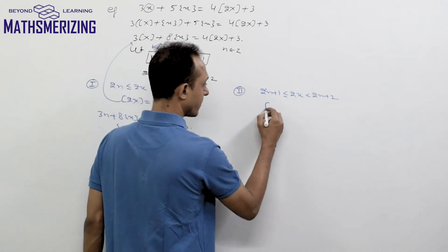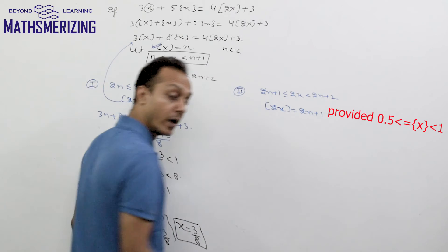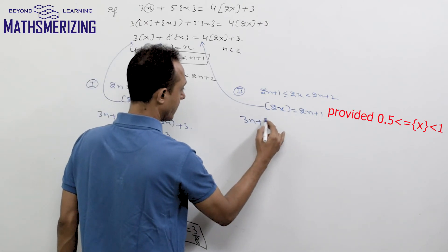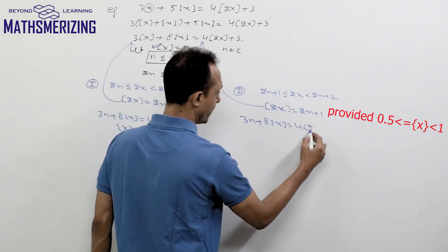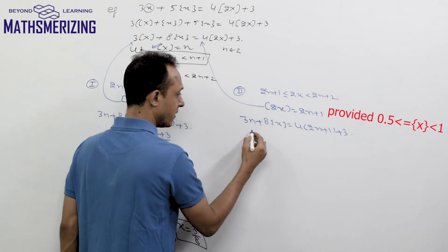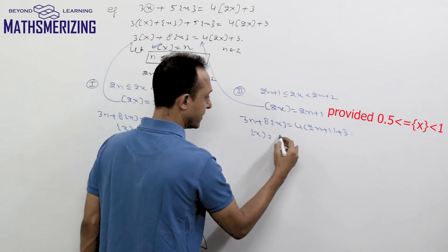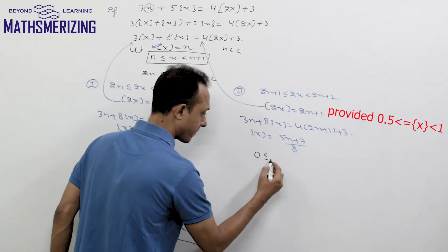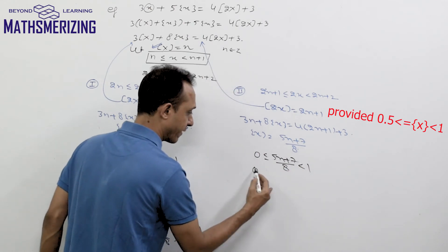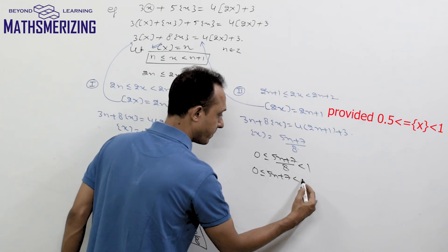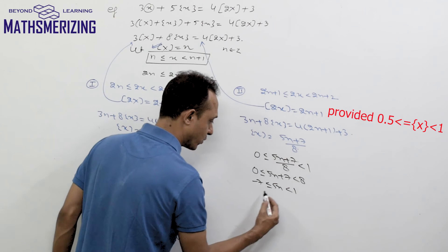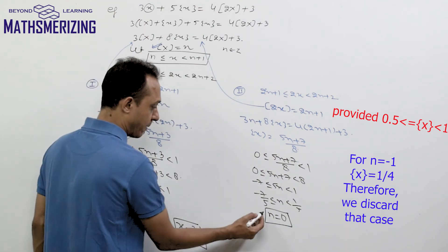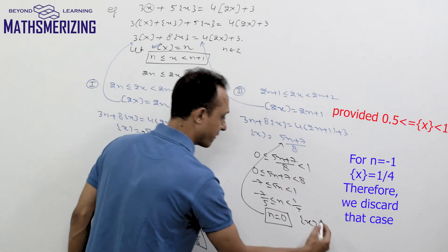Now I'll take up the second case. In Case 2, when 2x lies between 2n plus 1 and 2n plus 2, the greatest integer function of 2x is simply 2n plus 1. Substituting into the equation gives 3n plus 8 times the fractional part of x equals 4 times (2n plus 1 plus 3). So I can write the fractional part of x as 8n minus 3n, that is 5n plus 7 divided by 8. Again the fractional part of x lies between 0 and 1, so 0 ≤ (5n + 7)/8 < 1, giving minus 7 over 5 less than n less than 1 over 5. The only possible integral value of n is again 0.